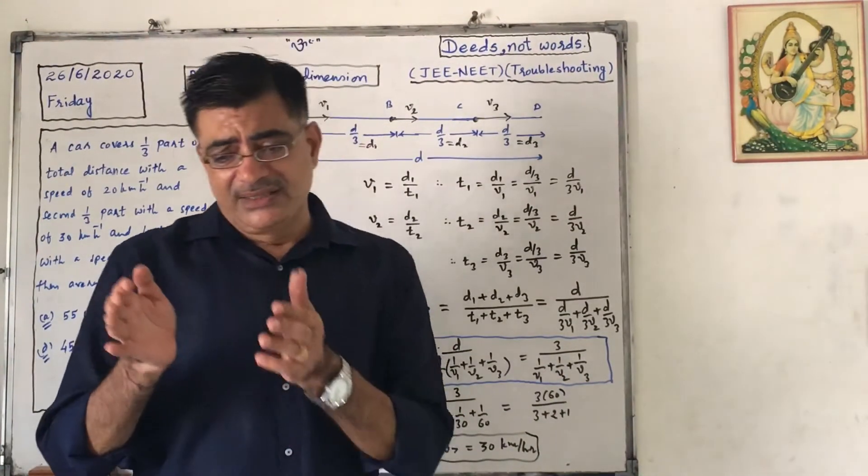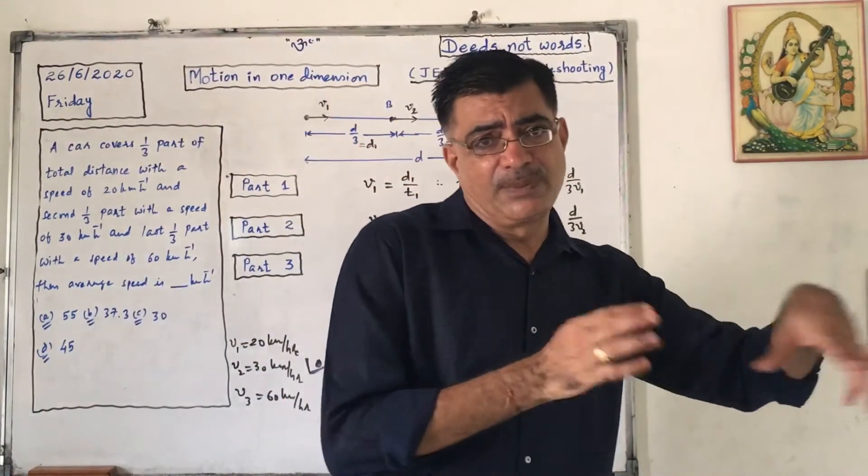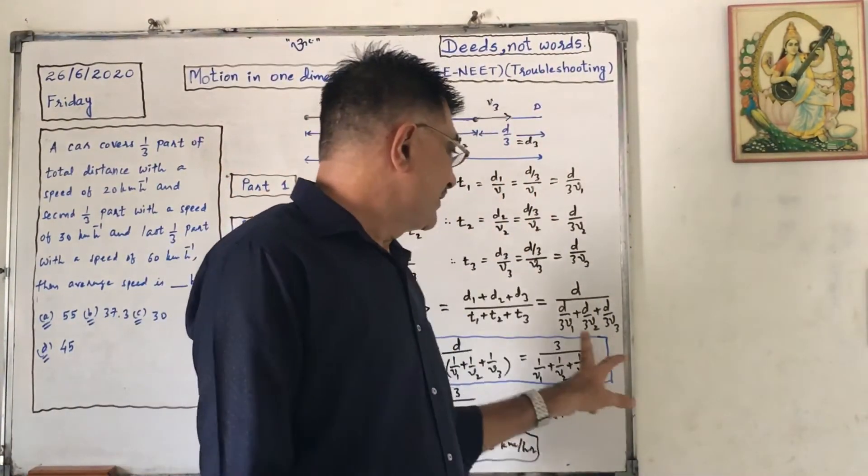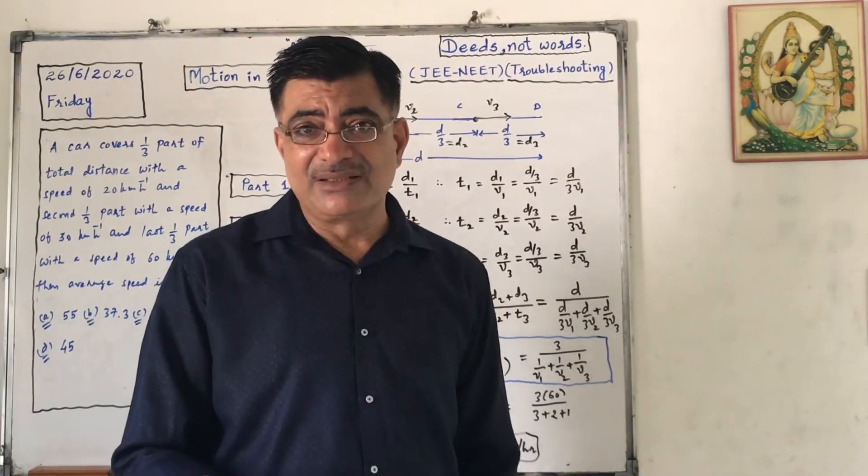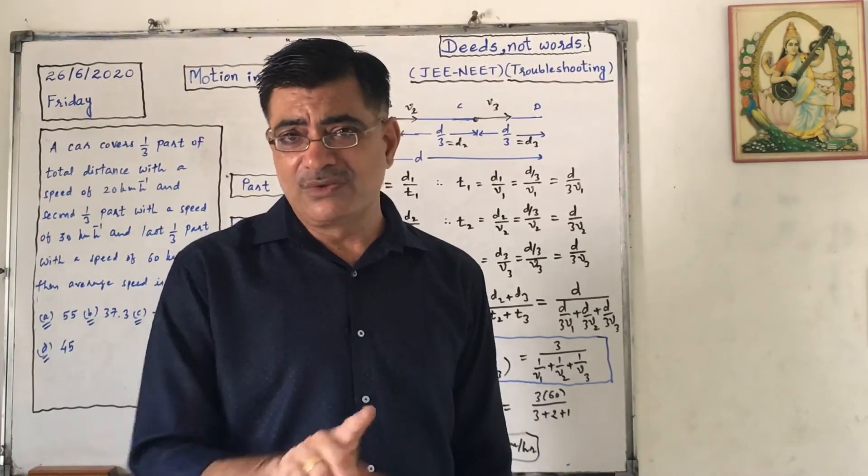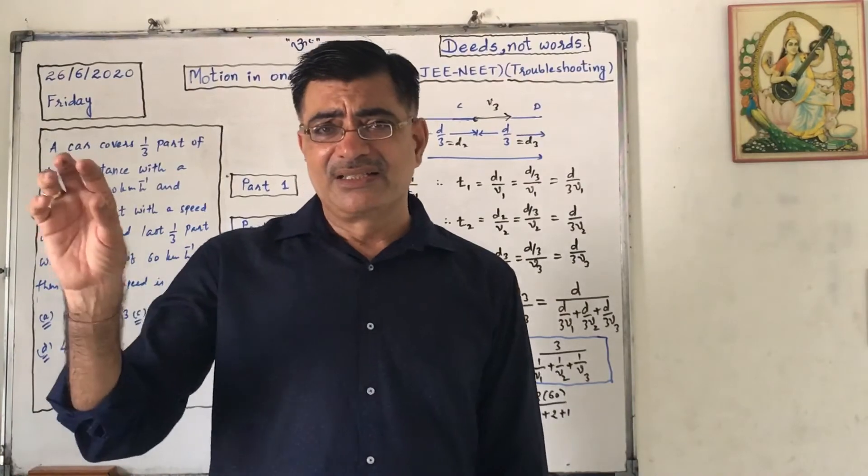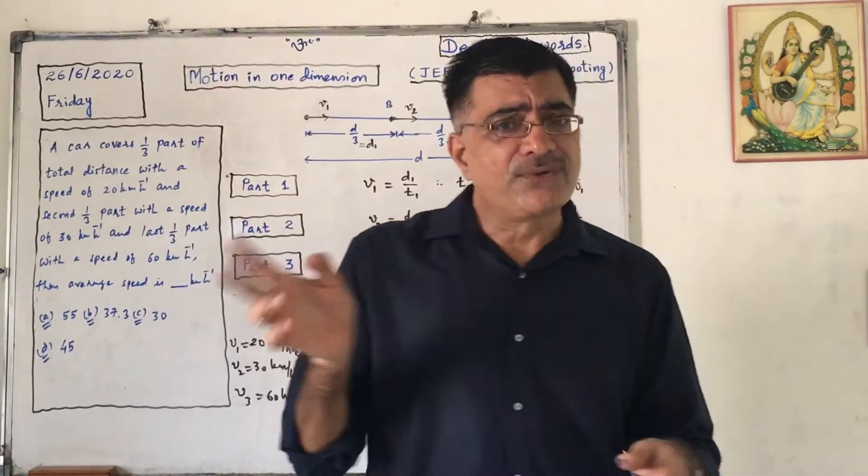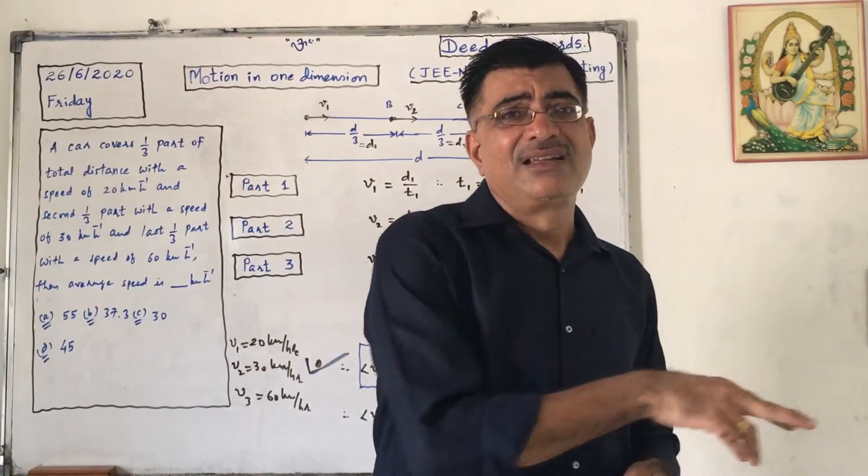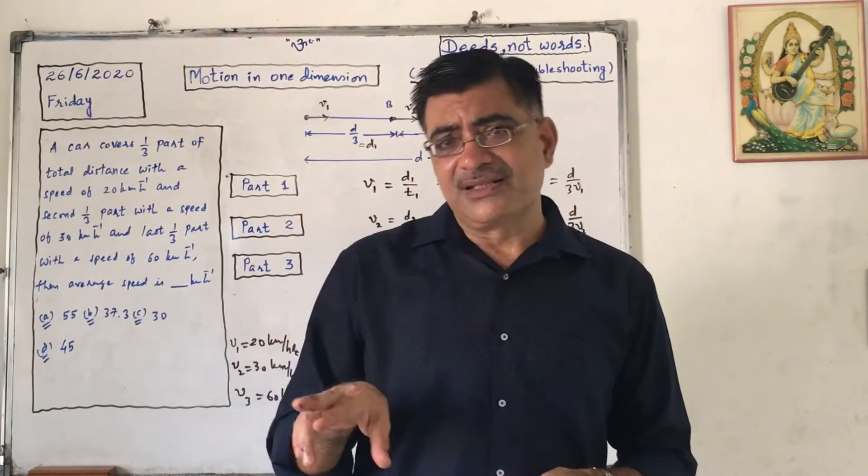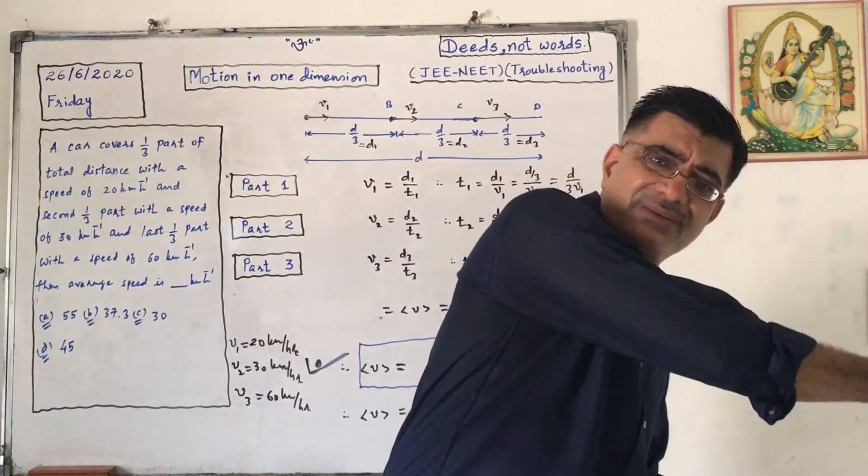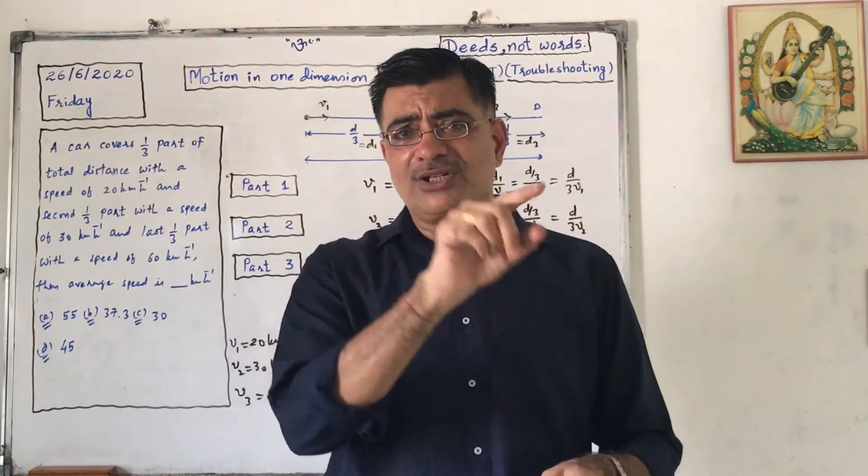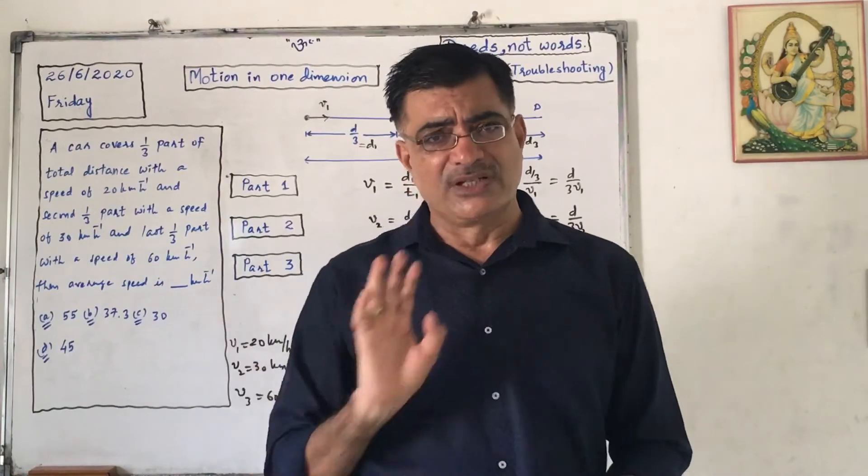If there are three equal phases or equal parts of constant speed, then average speed is 3 divided by 1 upon V1 plus 1 upon V2 plus 1 upon V3. If there are three equal parts of constant speed, here it is V1, here it is V2, here it is V3, then the average speed equals to 3 divided by 1 upon V1 plus 1 upon V2 plus 1 upon V3.